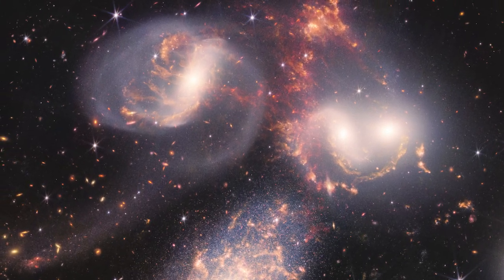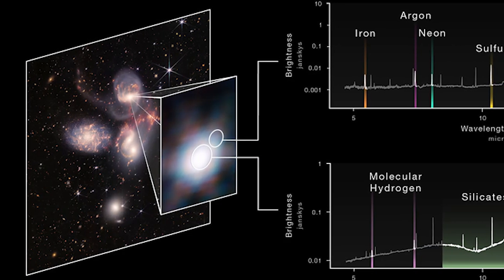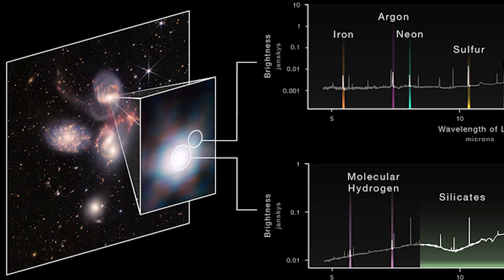One of the five galaxies in Stephan's Quintet, NGC7319, had a supermassive black hole that JWST was able to characterize the atmosphere around.